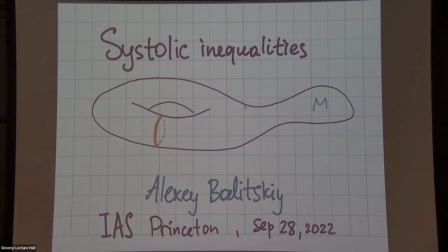This has to do with systolic inequalities. This picture depicts a torus, a two-dimensional torus with a Riemannian metric, so you can measure lengths and area. Whenever I'm talking about systoles, I mean something like this orange curve, which is a shortest non-contractible loop on my surface.